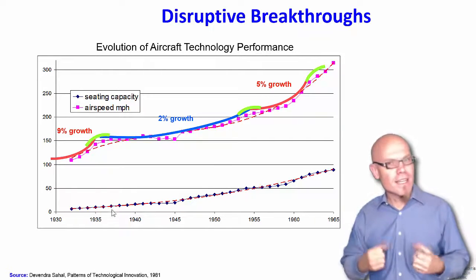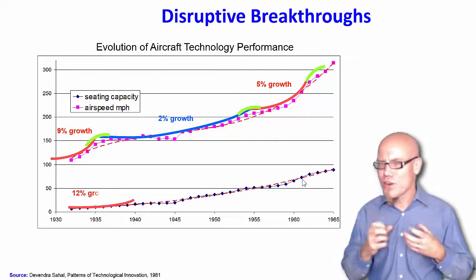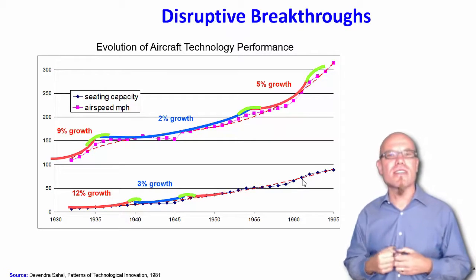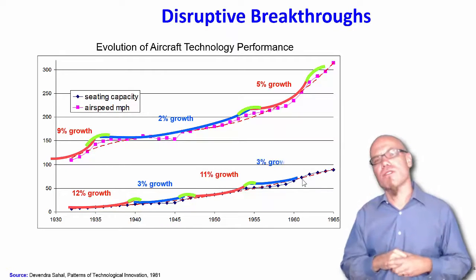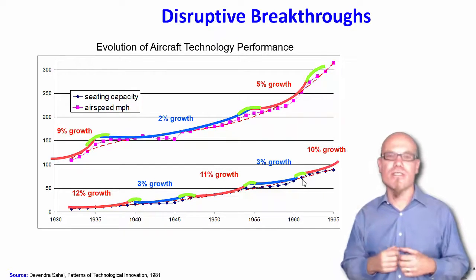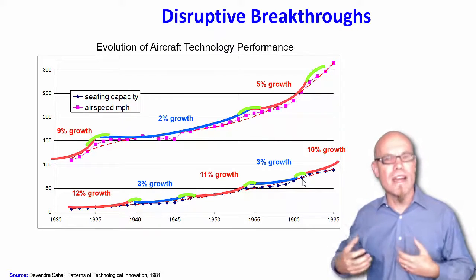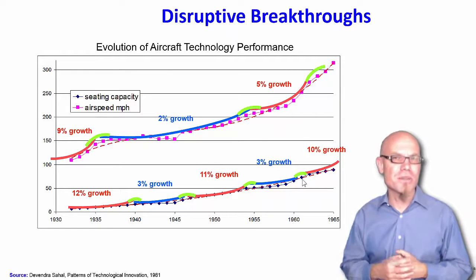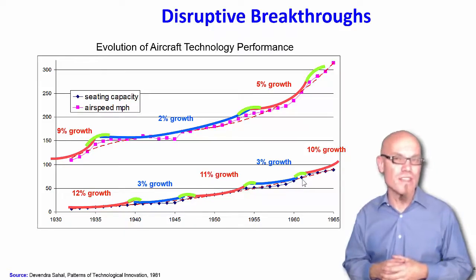Seating capacity had a different innovation rhythm — not going one-to-one with the propeller and jet engine innovations. But you can also see periods of more explosive growth and periods of slower growth, which, if you dig down, has to do with what kinds of innovations and recombinations are being made to advance the solution to the typical need of transporting many people from A to B through the air.